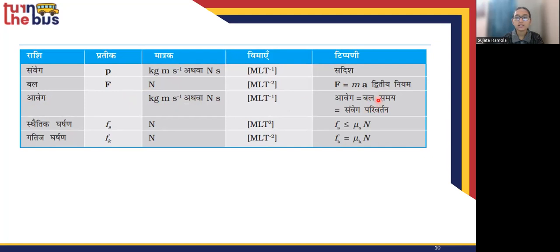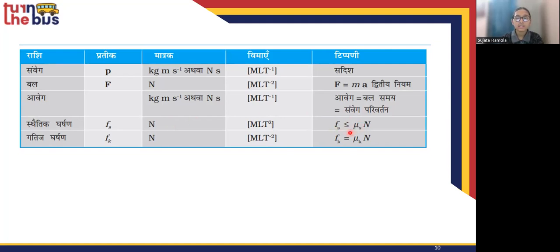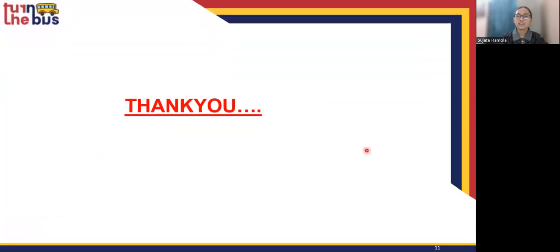आवेग (Impulse) का मात्रक kilogram meter per second होता है, जो कि संवेग के बराबर ही होता है। आवेग का सूत्र है: बल × समय, जिसे हम संवेग परिवर्तन के नाम से भी जानते हैं — यह बहुत महत्वपूर्ण है। स्थैतिक घर्षण (static friction) Fs = μs × N होता है, और गतिज घर्षण F = μ × N होता है। इस तरह हमारा Chapter पूरा होता है — धन्यवाद, अगले Chapter में भी पढ़ते रहें।